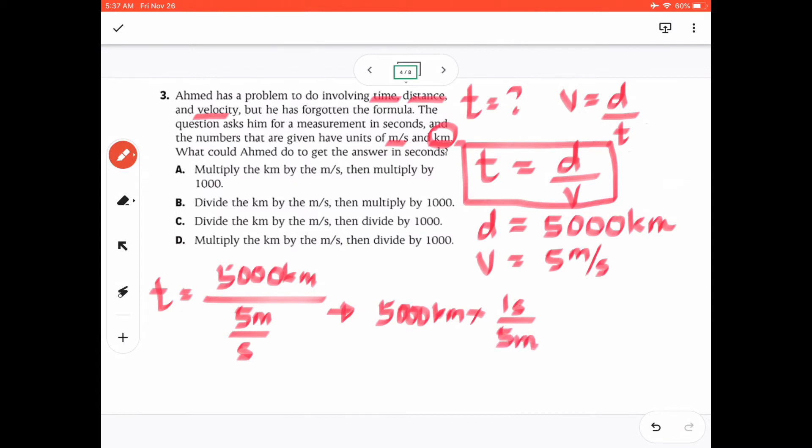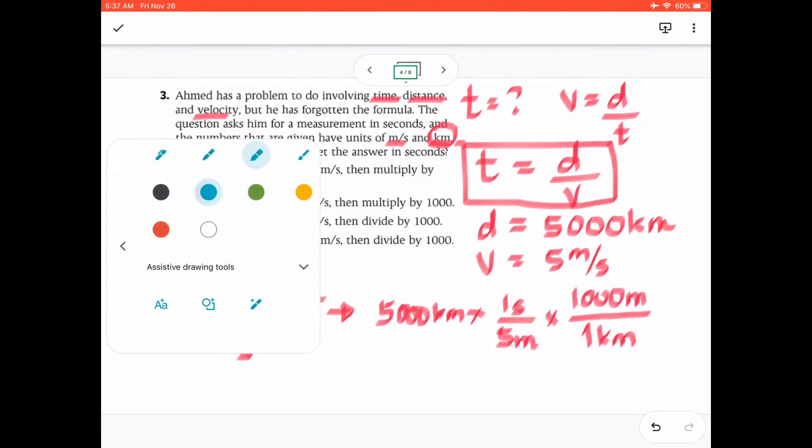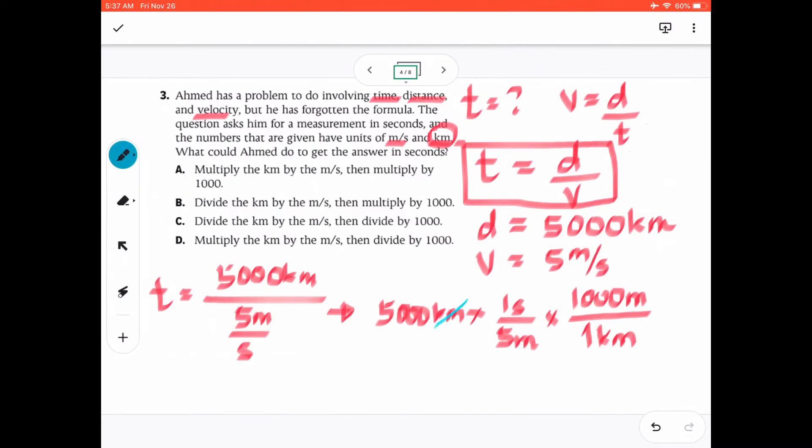Now, we want to change the kilometer to meters, so we are going to multiply it with the conversion factor. 1 kilometer is equal to 1,000 meters. So in this case, we'll be able to cancel out kilometer and kilometer and meter and meter. We are left with the unit S. So what did we do? We divided first the distance divided by the velocity. So we divided the kilometer by the meter per second. And then, what did we do next? We multiplied 1,000. So this is the answer.